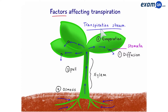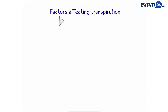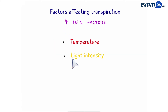In this video, we're going to be focusing on factors that affect the rate of transpiration. There are four main factors: temperature, light intensity, wind, and humidity. Let's see how these factors affect the rate of transpiration.